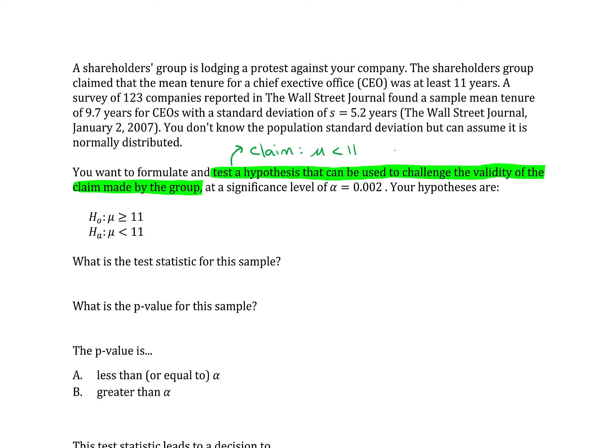A couple other things that are important. We have a level of significance of 0.002. And then, of course, inside the problem, we have our sample data. We have a sample of 123 companies. The mean of that sample is 9.7. The standard deviation of that sample is 5.2.